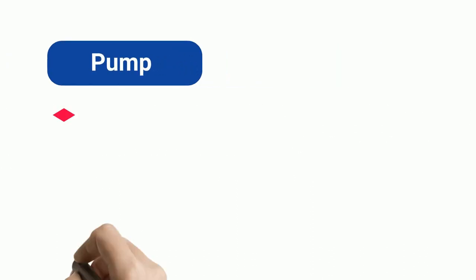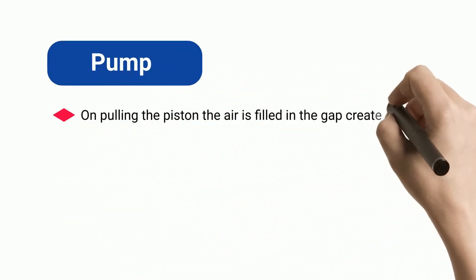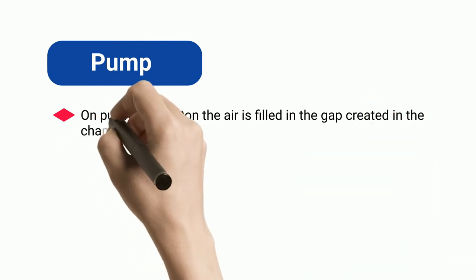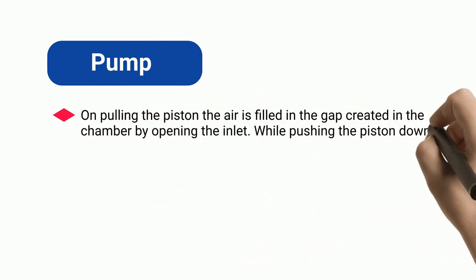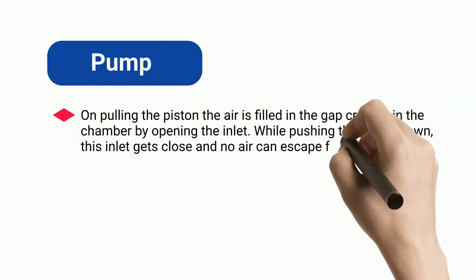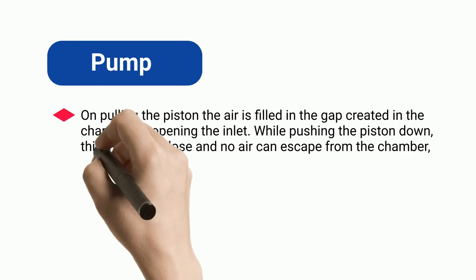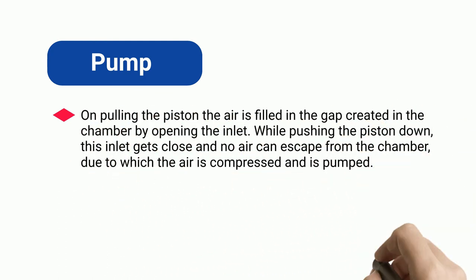Pump: on pulling the piston, air fills the gap created in the chamber by opening the inlet. While pushing the piston down, the inlet closes and no air can escape, due to which the air is compressed and pumped out.